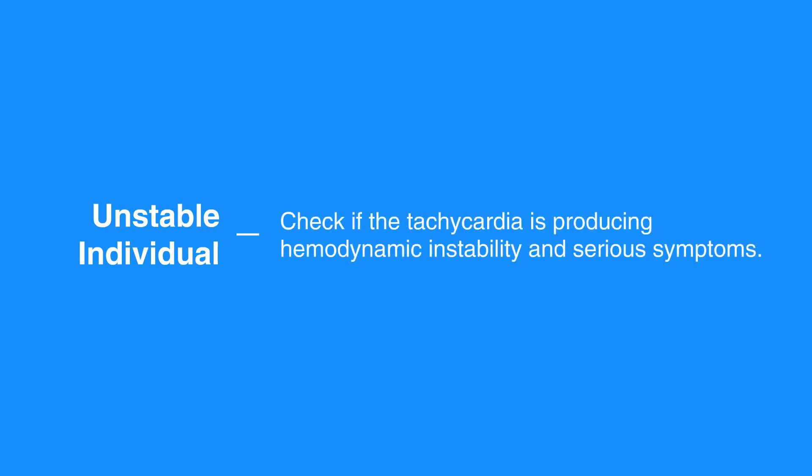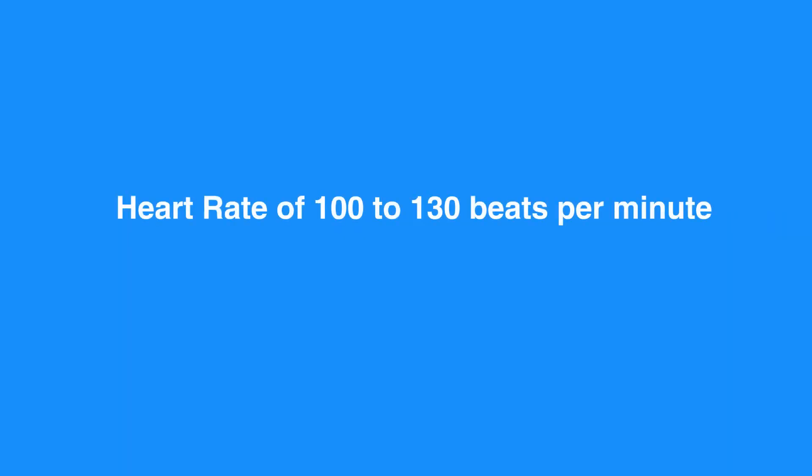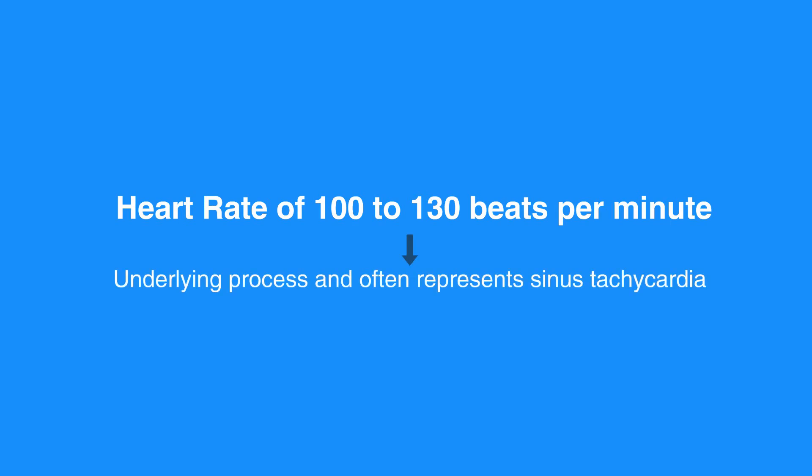Check if the tachycardia is producing hemodynamic instability and serious symptoms. Check if symptoms such as pain and distress of an acute myocardial infarction, or AMI, are producing the tachycardia. Assess the individual's hemodynamic status by establishing an IV, giving supplementary oxygen, and monitoring the heart. A heart rate of 100 to 130 beats per minute is usually the result of an underlying process and often represents sinus tachycardia, in which the goal is to identify and treat the underlying systemic cause.